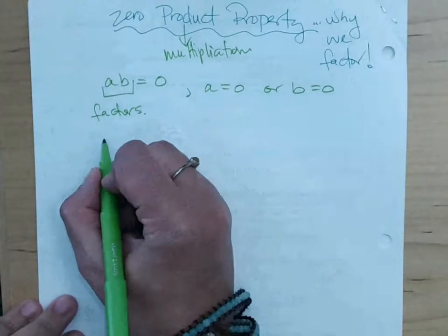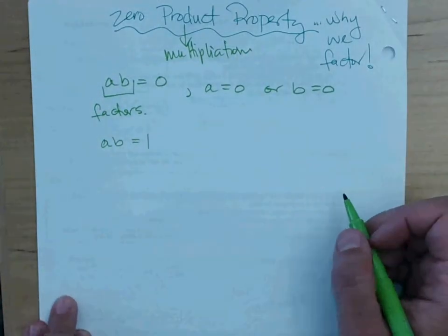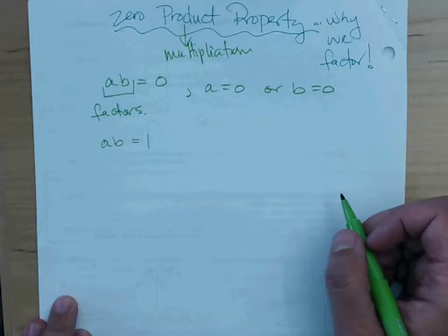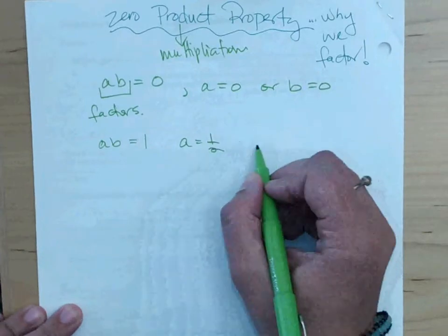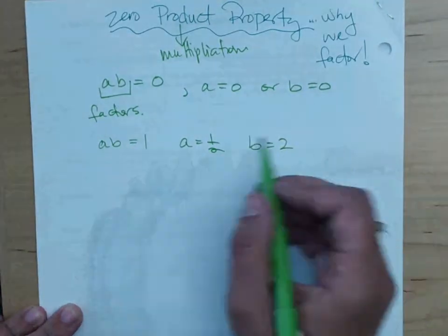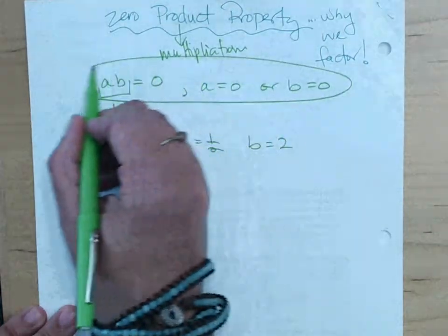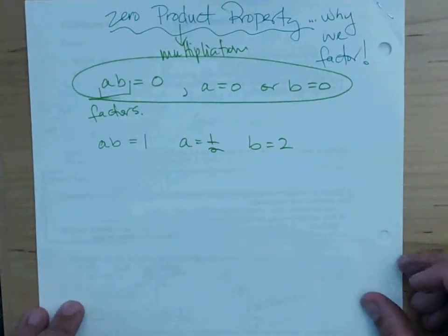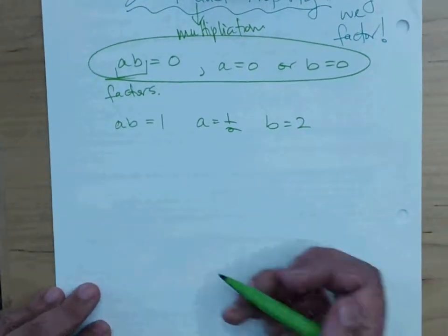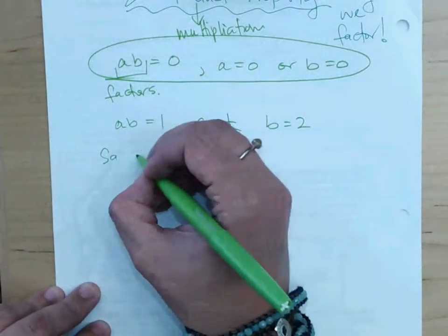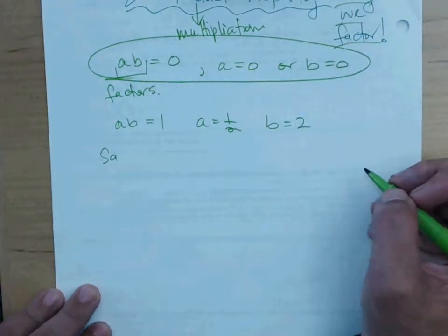If I told you that A times B equals one, do you know what either one of those numbers is? Not conclusive. Yeah, it could be A could be one half and B could be two, but you're not sure. So this is the reason why we have this special rule about zero and this helps us to solve.